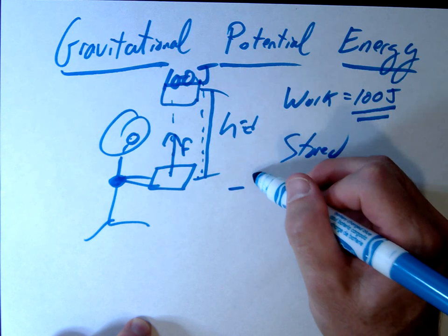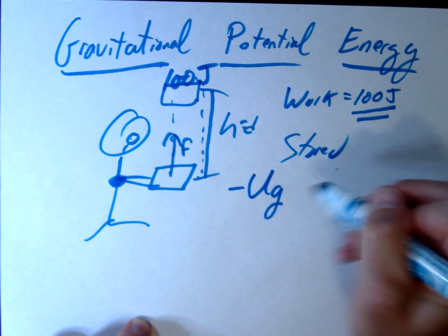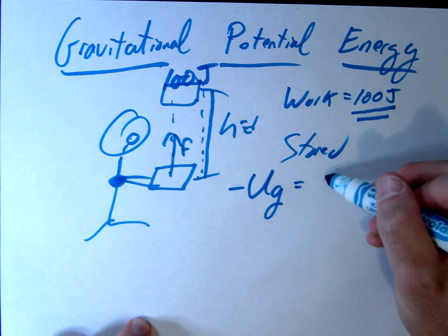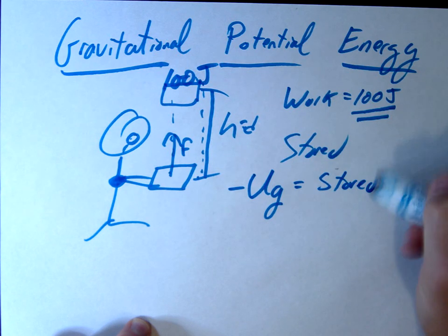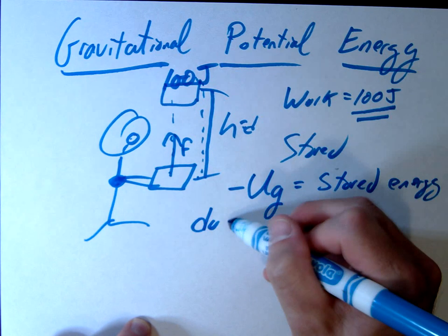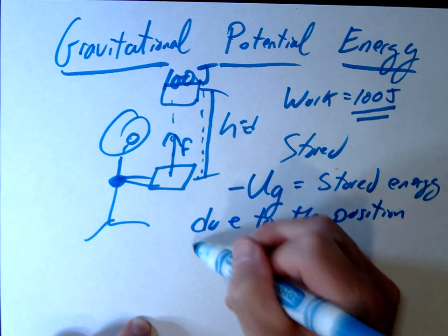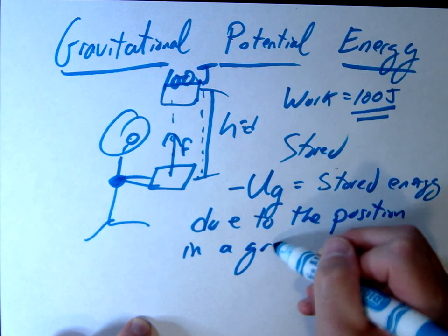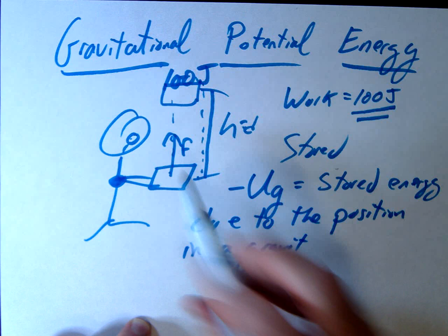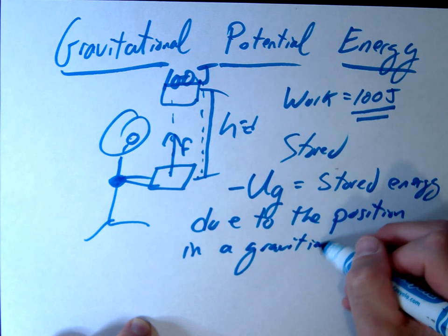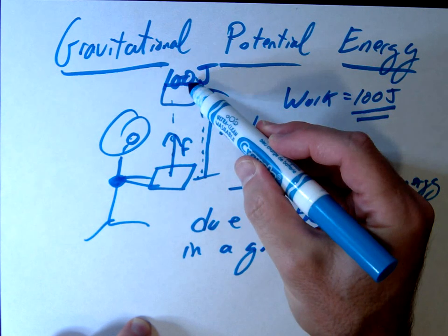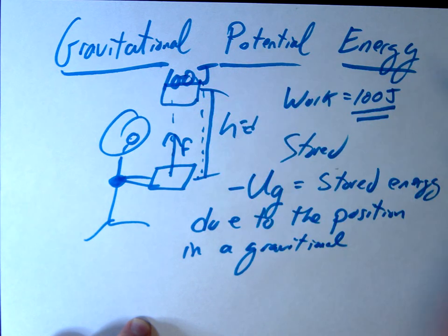And this stored energy is what we call gravitational potential energy. So let's just define this as a stored energy. So potential energy, gravitational, we use the symbol UG. This is stored energy due to the position in a gravitational field.